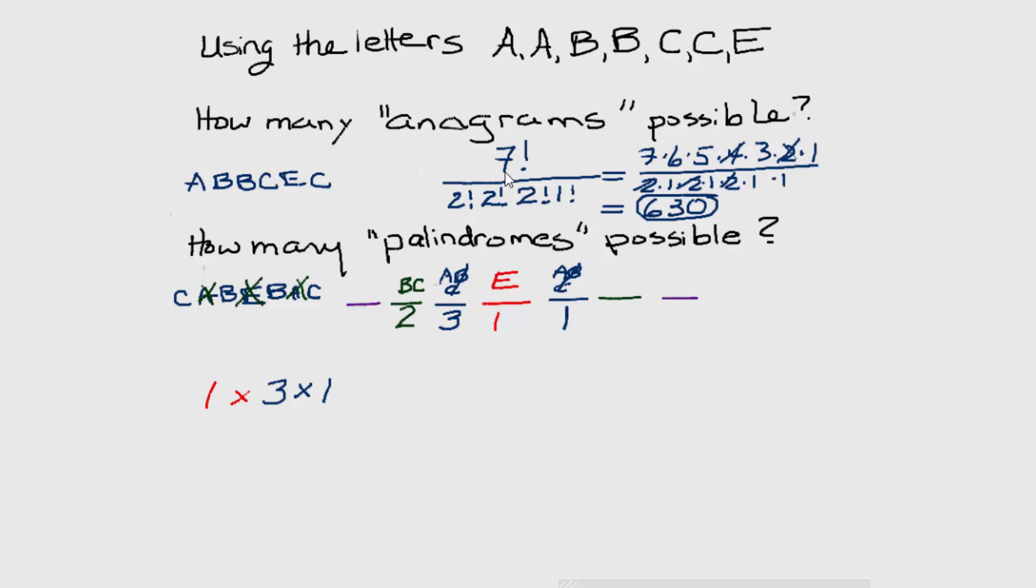But once we decide which of these letters to use, for example, suppose we chose the B, there is only one option for the other letter in green. It has to be a B as well.